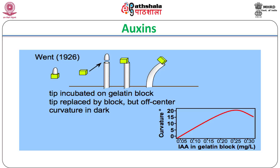If the concentration gradient was asymmetrical, it led to curvature of coleoptiles, since one side of the coleoptile received more auxin than the other and hence the former grew more than the latter.